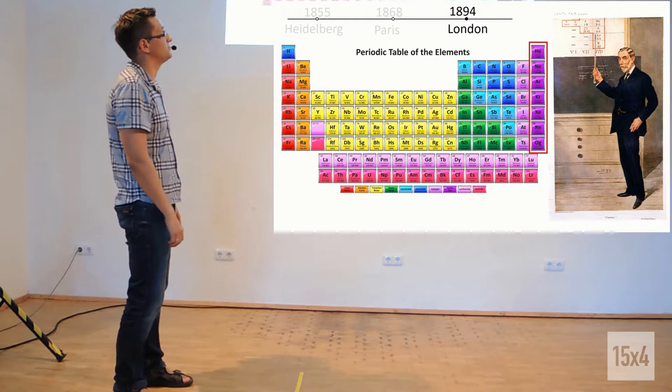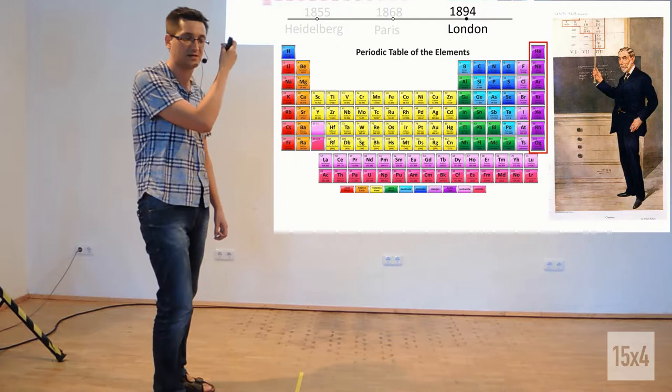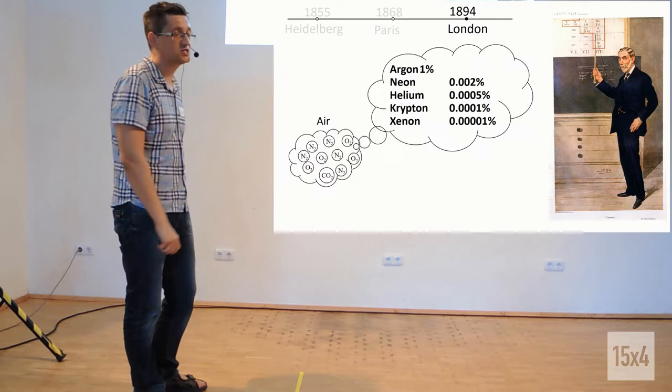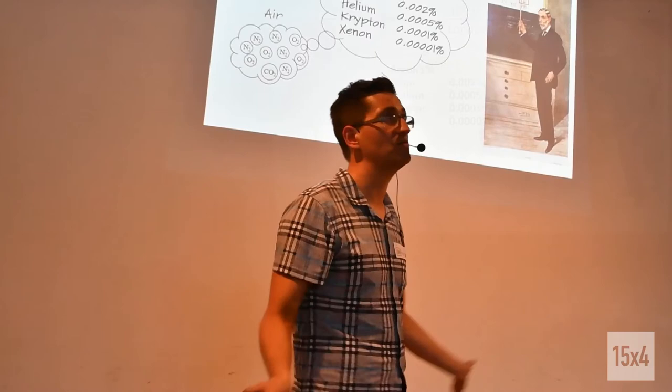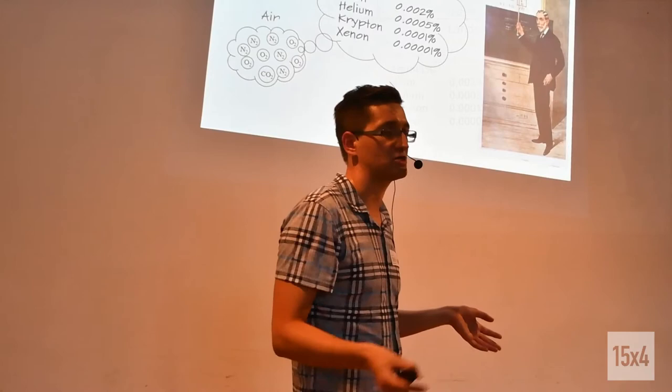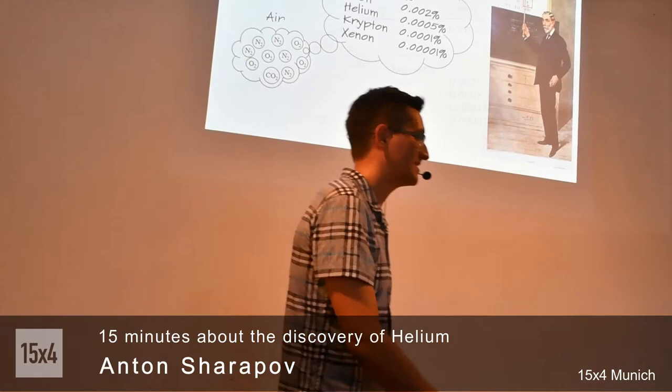That's the periodic table as we know it now. You can see that the last column, which represents the inert gases, was mainly founded in the last two decades of the 19th century by Ramsay. And now, the picture of the air is complete. You can see that together with oxygen and nitrogen, we have five more inert gases in the air. Even in this room where we're breathing, you breathe in and breathe out argon. Quite a lot, actually. It's about 10 to 20 cubic centimeters. But because it's inert, it doesn't react with anything in our body and it easily goes out. That's the end of my story.